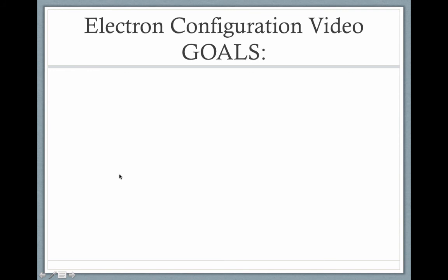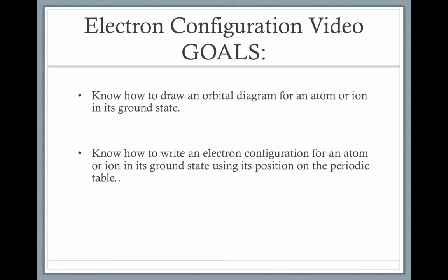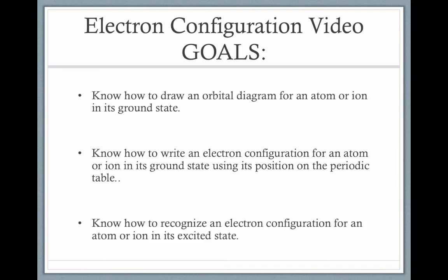Welcome to Unit 7, Video 4: Electron Configuration. By the end of this video, you should know how to draw an orbital diagram for an atom or ion in its ground state, how to write an electron configuration for an atom or ion in its ground state using its position on the periodic table, and how to recognize an electron configuration for an atom or ion in its excited state.